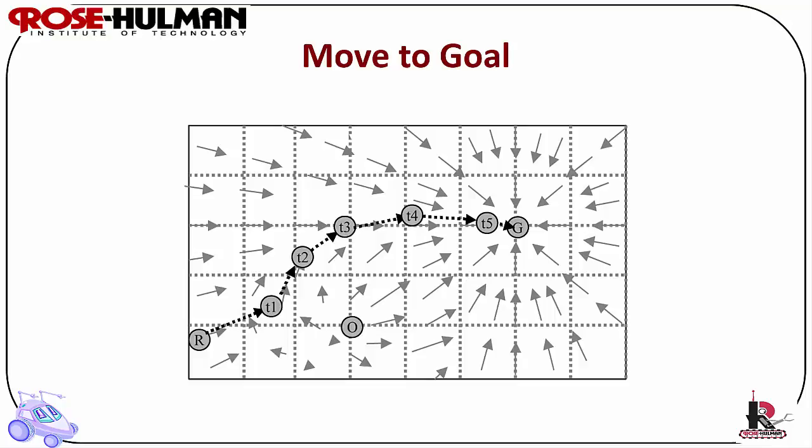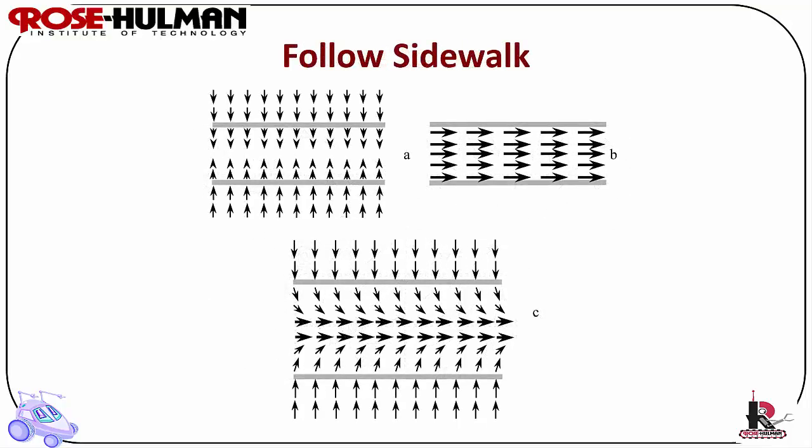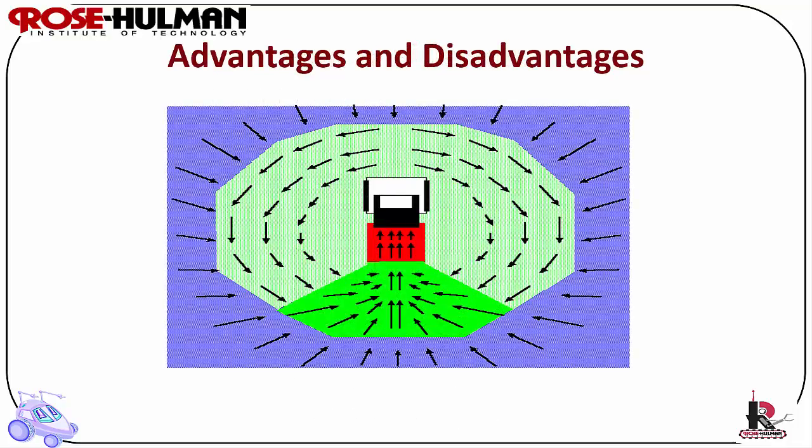For follow sidewalk, here's an example of how to use potential fields. The robot would model the sides as attractors in order to move the robot to the sidewalk. Once it's in the center of the sidewalk, the center is modeled as a forward uniform flow to keep the robot on the sidewalk. Finally, here's an example of how to use potential fields to dock a robot, which is similar to the technique used for following a sidewalk.